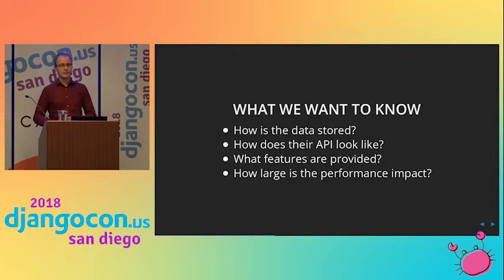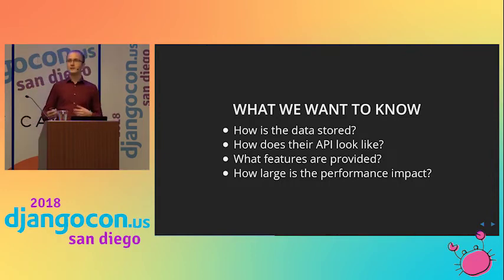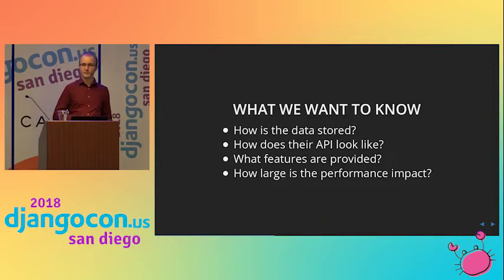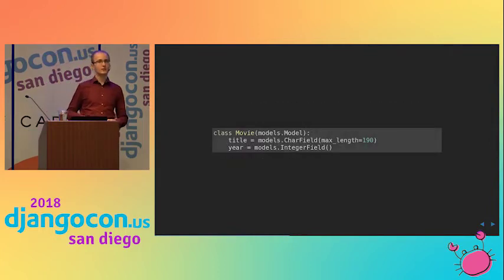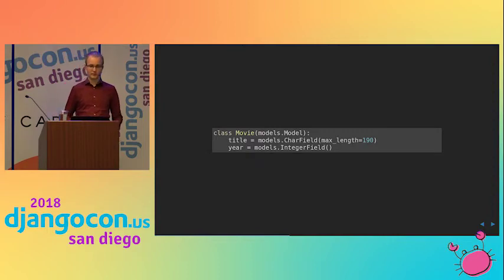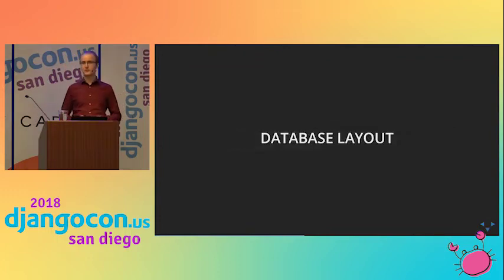To compare these, we want to look at different categories. We want to look at how the data is stored in the database, how their Python API looks and how easy it is to work with them, what other features they might provide such as integration with Django admin and forms, and whether they have a significant performance impact. To have an example to work with, let's use a model where we store a list of movies — for every movie, we store the title and the year released. The year is not really locale-dependent, but the title is certainly something that differs everywhere in the world, even for the same movie.